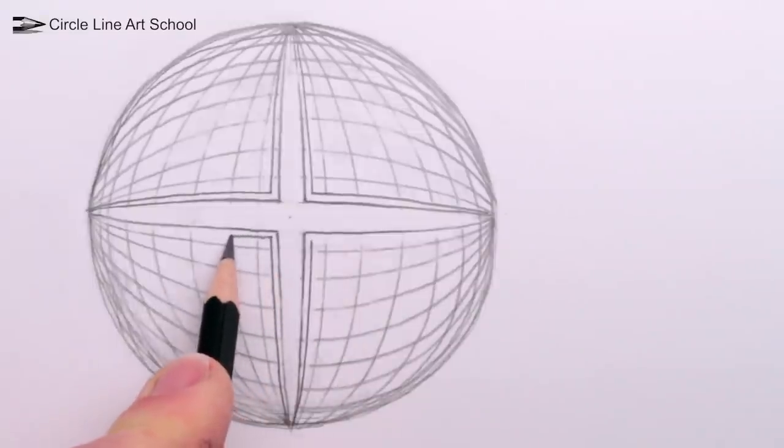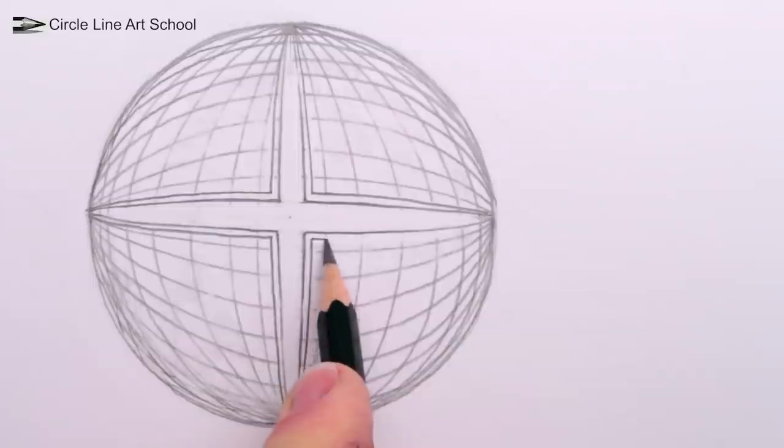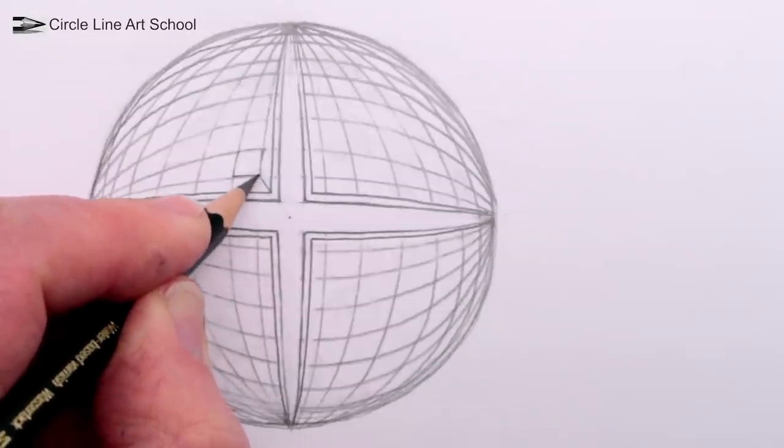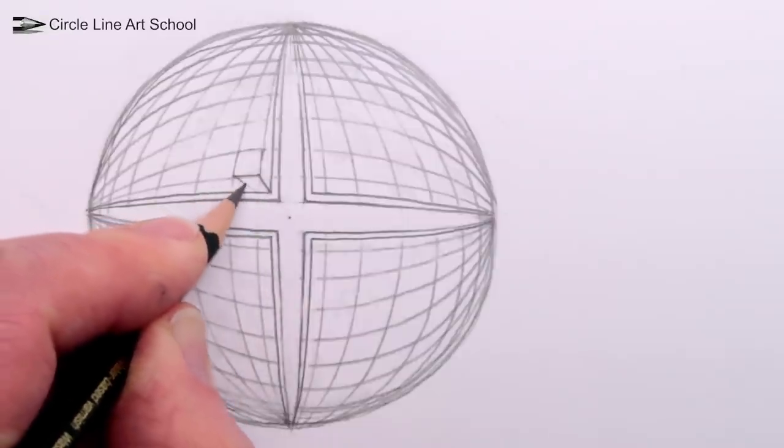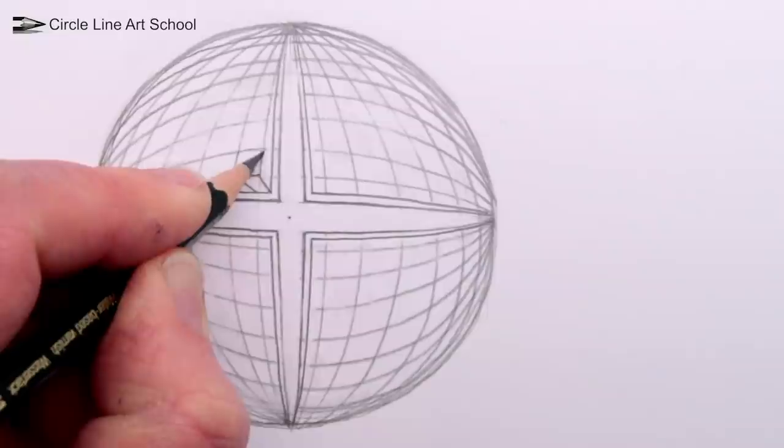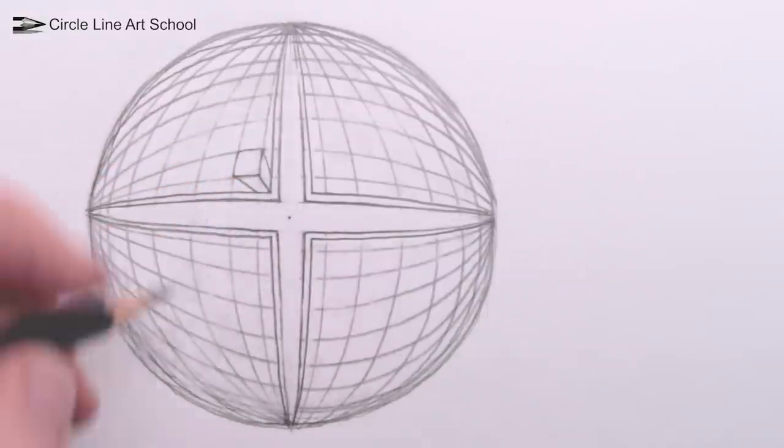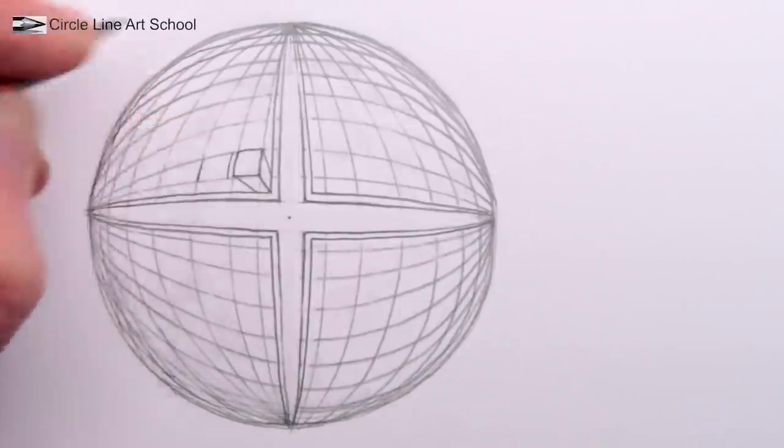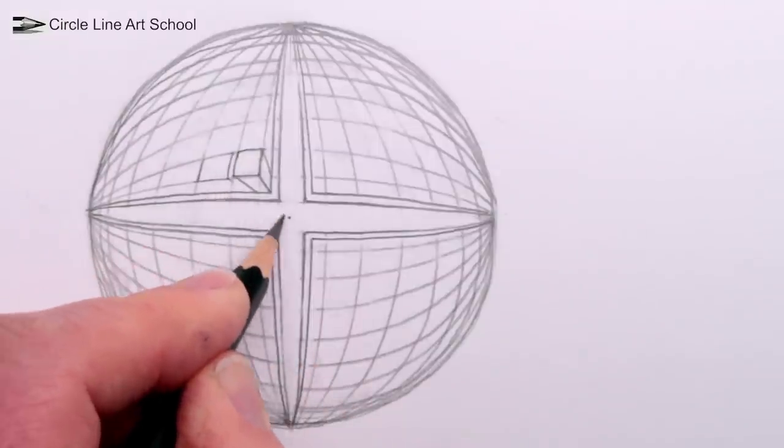We have now drawn a curved grid using our four vanishing points. Now we can make this shape into a city full of buildings by using the vanishing point in the center of the circle, the fifth vanishing point. Each of the squares of our curved grid can become the flat rooftop of buildings, and by drawing straight lines from the center vanishing point to all of the corners of the roof squares, we can draw many buildings in five-point perspective.